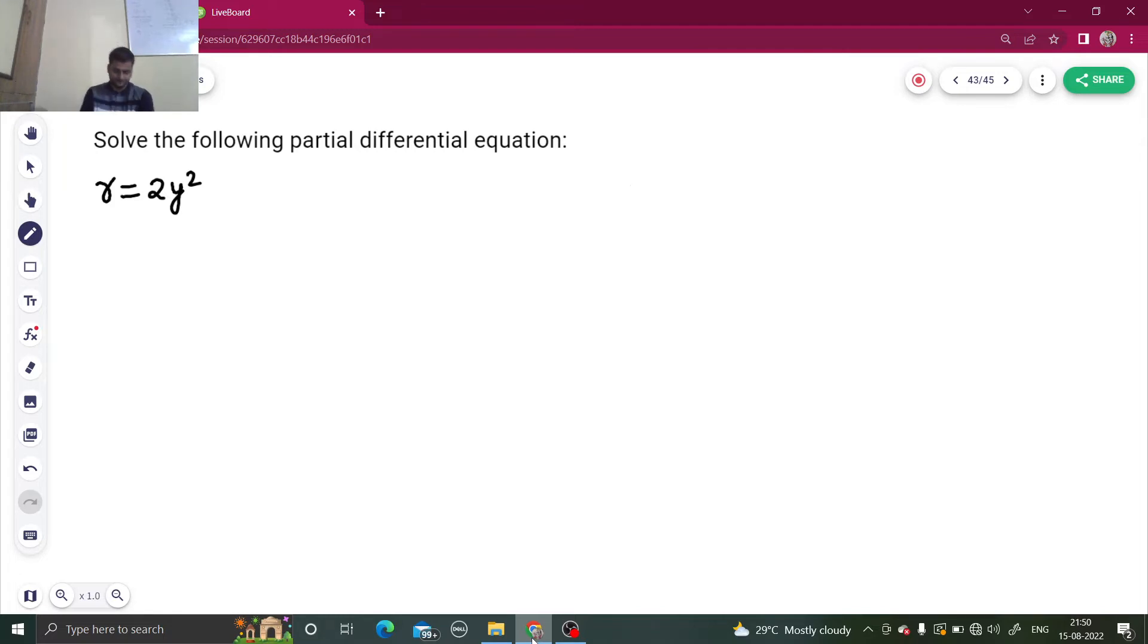R equals to 2y squared. So what is R? R is basically del 2z by del x squared. Here del 2z by del x squared is equal to 2y squared. Now how to solve this? One by one, we will remove the del by del x in order to reach to z.